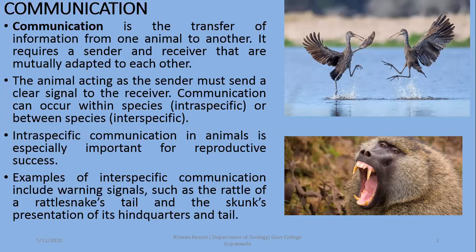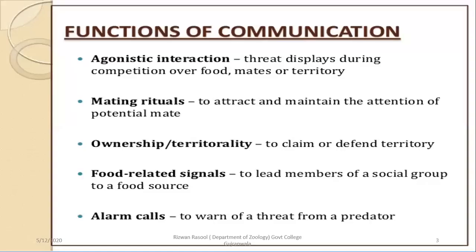For example of intraspecific communication, warning signals such as a rattlesnake signaling through its tail, or alarm calls, are also within the same species. Talking about the same species as well as other species, a predator can also be able to receive a signal. These are the functions of communication. Agonistic functions involve threat displays during competition over food, mates, or territory.